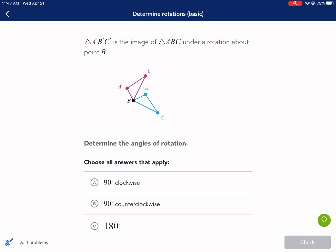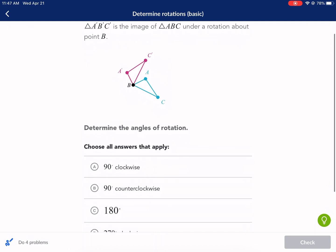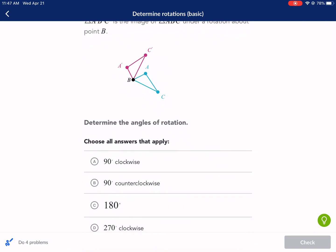We have triangle ABC prime is the image of ABC under rotation about point B. So you can see the blue one is the original, the pink is the prime one, which means it's the image. Blue is pre-image, pink is image.